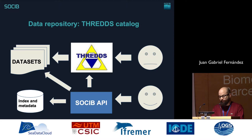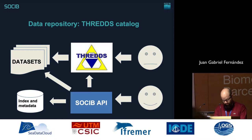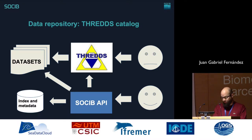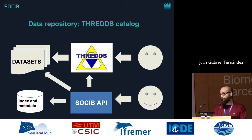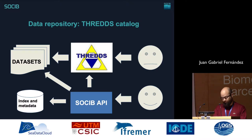Somewhere between archiving and dissemination, we have our THREDDS server. Most of you have probably worked with this kind of server and know its main capabilities. But for those unfamiliar with this technology, basically it's a web server with the capacity of exposing a data repository, organizing a folder structure of your own, usually containing NetCDF files. However, this technology has an important limitation: we cannot perform queries against the data. We have solved this gap by means of our new SOCIP API.